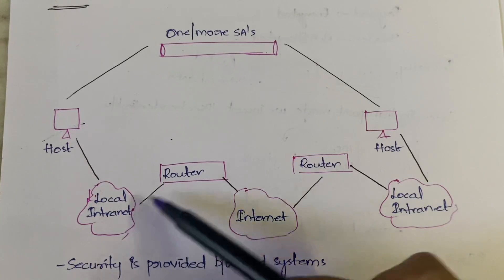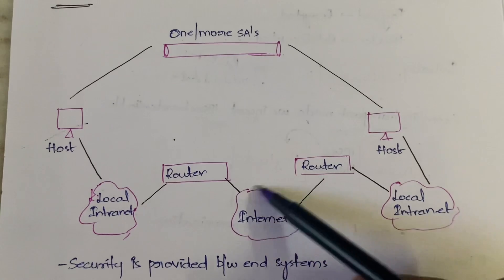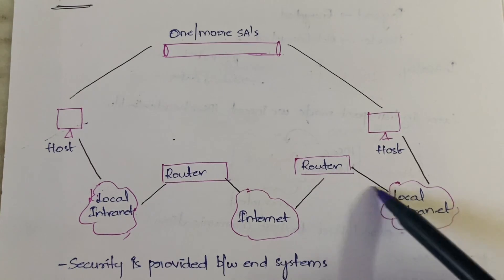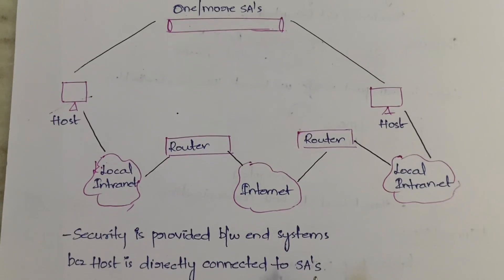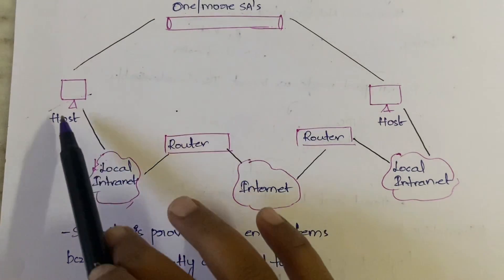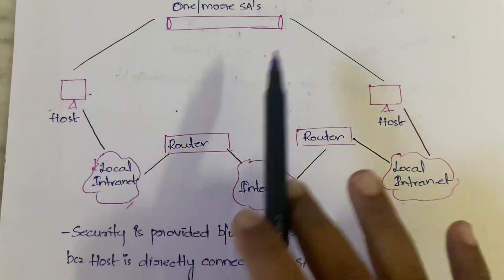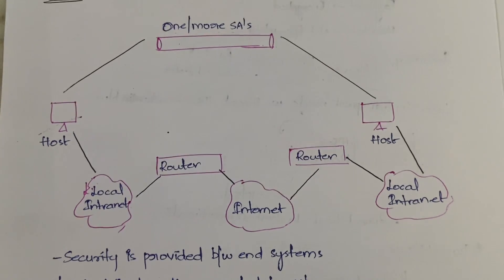The host is connected to the local intranet, and from there it is connected to the router. On the other side, the receiving host is also connected to its local intranet and to its router. From the common internet, the router distributes the network to the hosts. Security is provided between the end systems because the host is directly connected to the security associations.